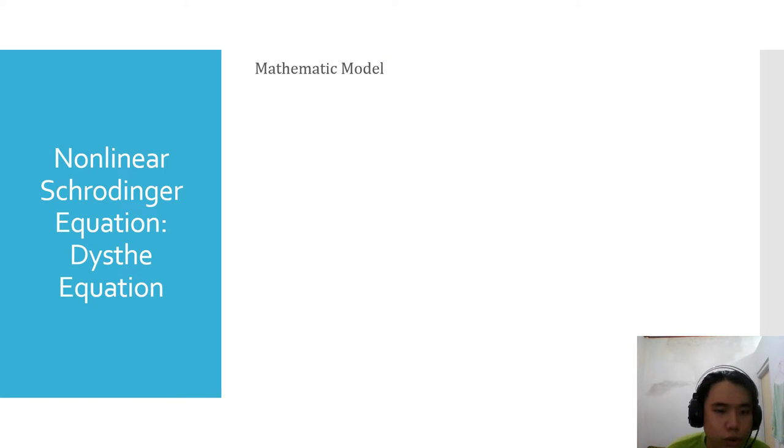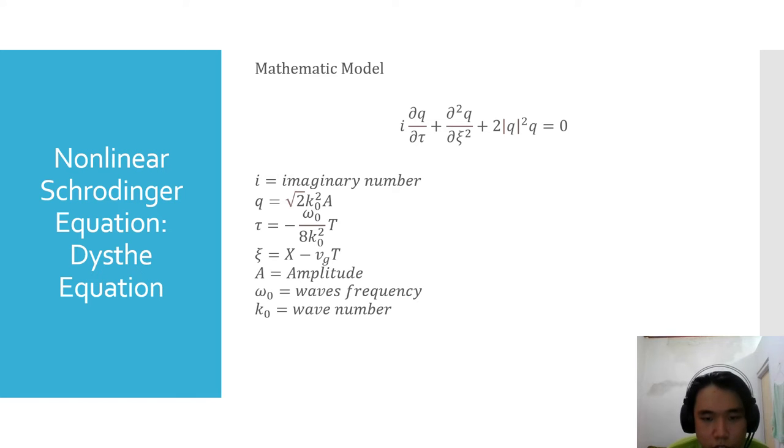And then, from the phenomenon of deep water waves, the Non-Linear Schrodinger Equation, or we call the Diss-Tay Equation, is obtained. As you can see, here this is the Diss-Tay Equation.